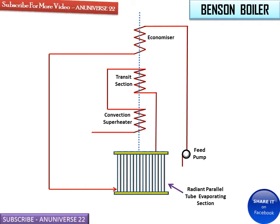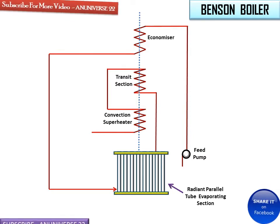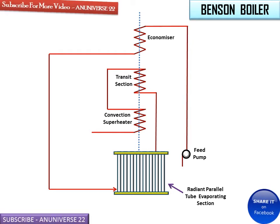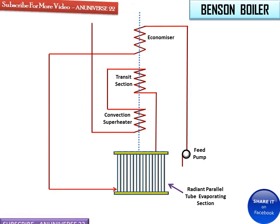Finally, it is supplied to the convection or convective superheater, which is the last chamber of the boiler. The saturated steam coming out from the transit section is supplied to the convection superheater, which increases the temperature of the steam. This superheated steam at about 650 degrees Celsius is taken out for industrial work and moves to the prime mover.